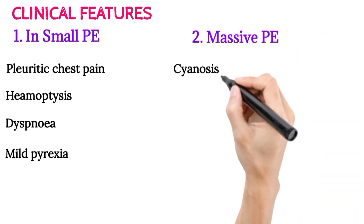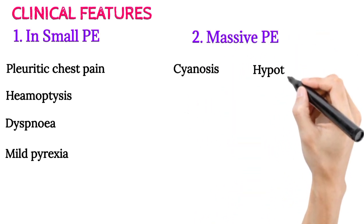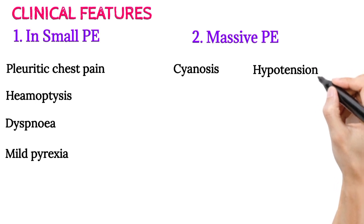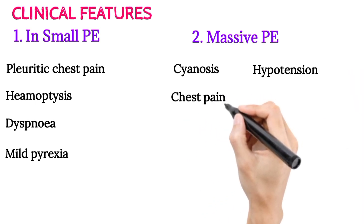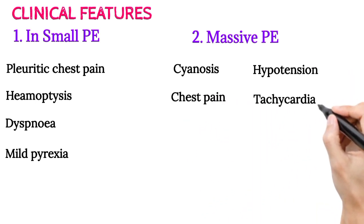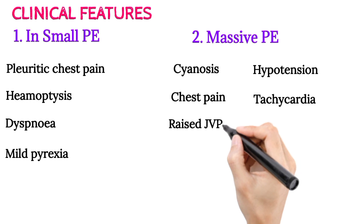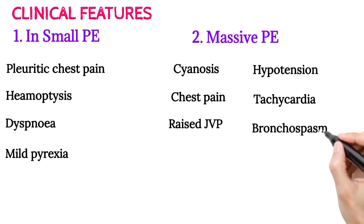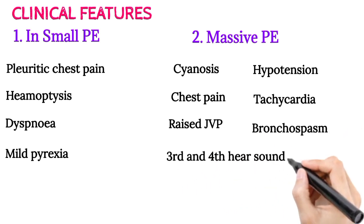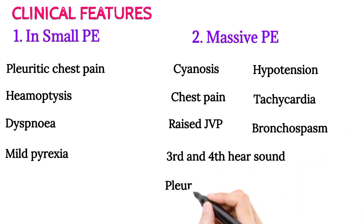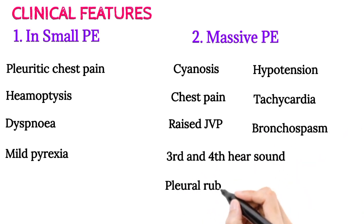In massive pulmonary embolism, the clinical features include cyanosis, hypotension, chest pain, tachycardia, raised JVP, bronchospasm, third and fourth heart sounds, and pleural rub.